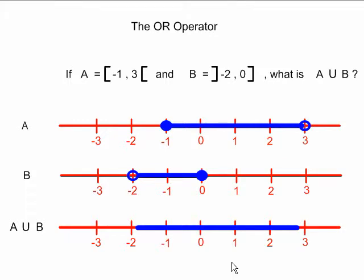Then I have to turn my attention to the actual numbers negative two and three. Negative two is not in B or A, so it is not in the answer, and I show that with an open circle around negative two.